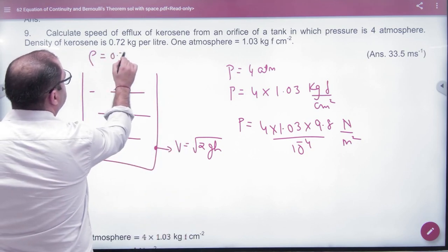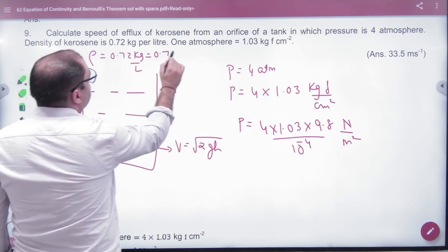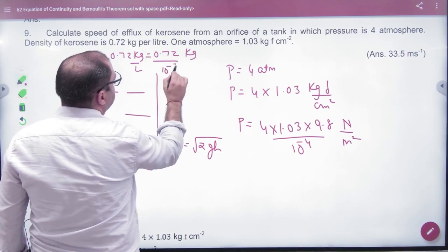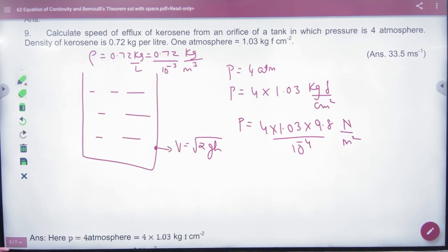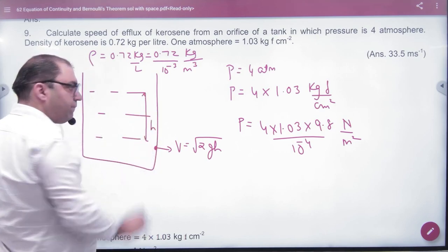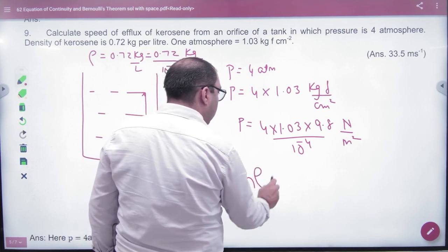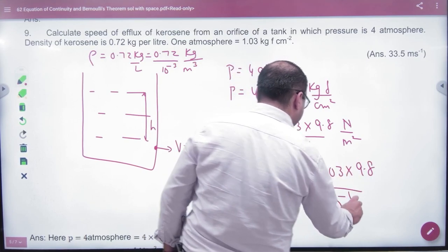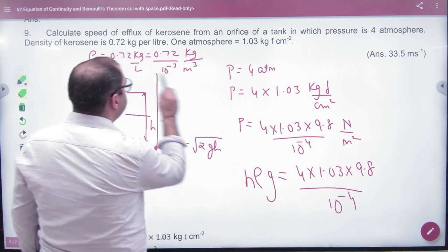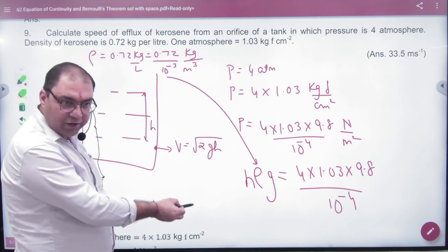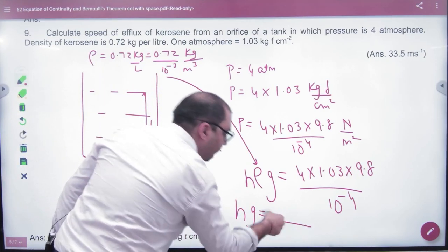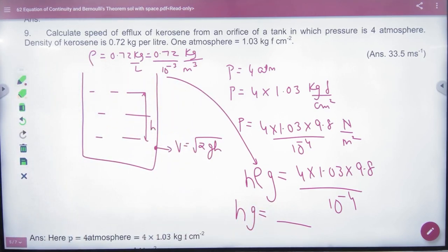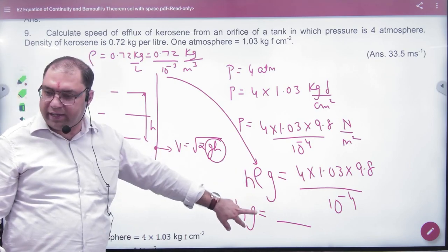Density is 0.72 kg per liter, which is 10 raise to power minus 3 meter cube. So what do you need? Kerosene height. So pressure is 4 into 1.03 into 9.8 divided by 10 raise to power minus 4. You have to put density here. Density of kerosene and solve H into G value, Hg. Because what you need is Hg multiplication. The answer will come.